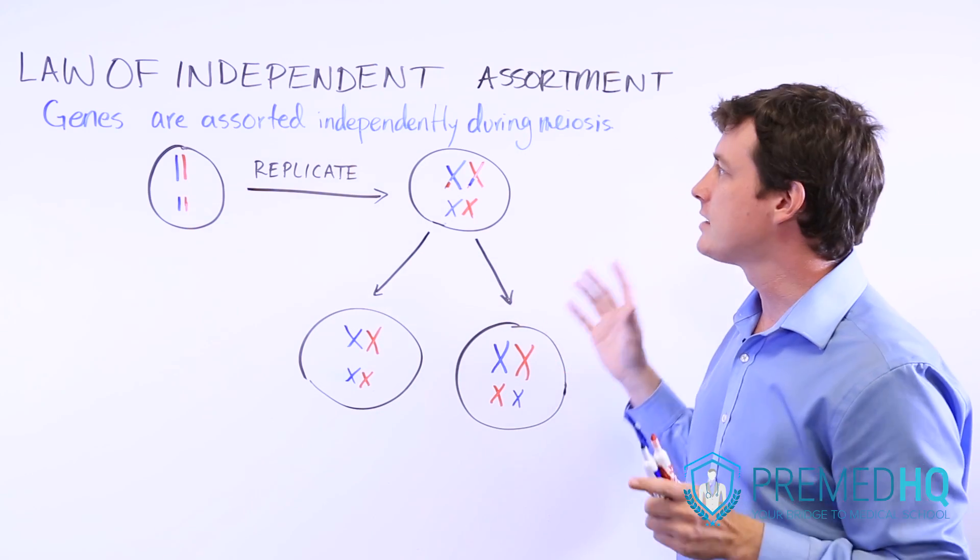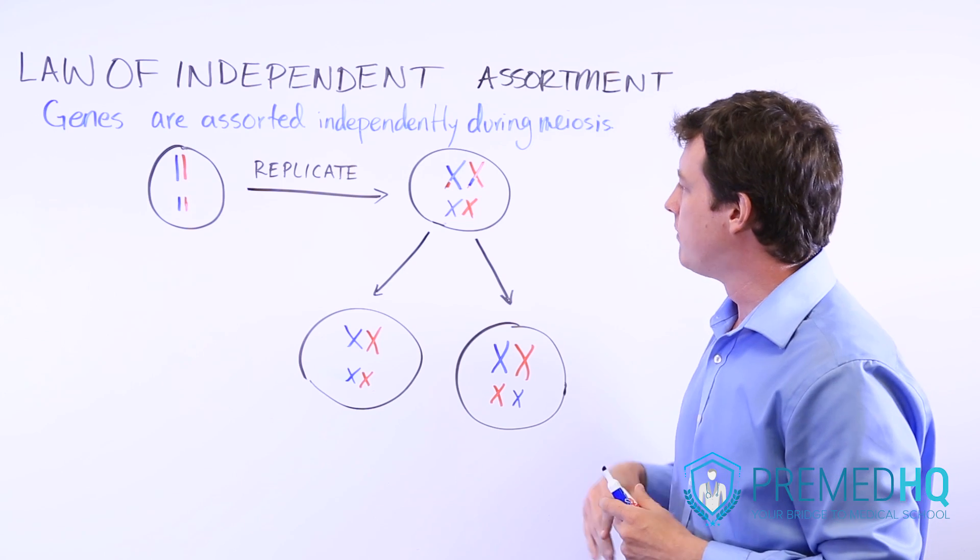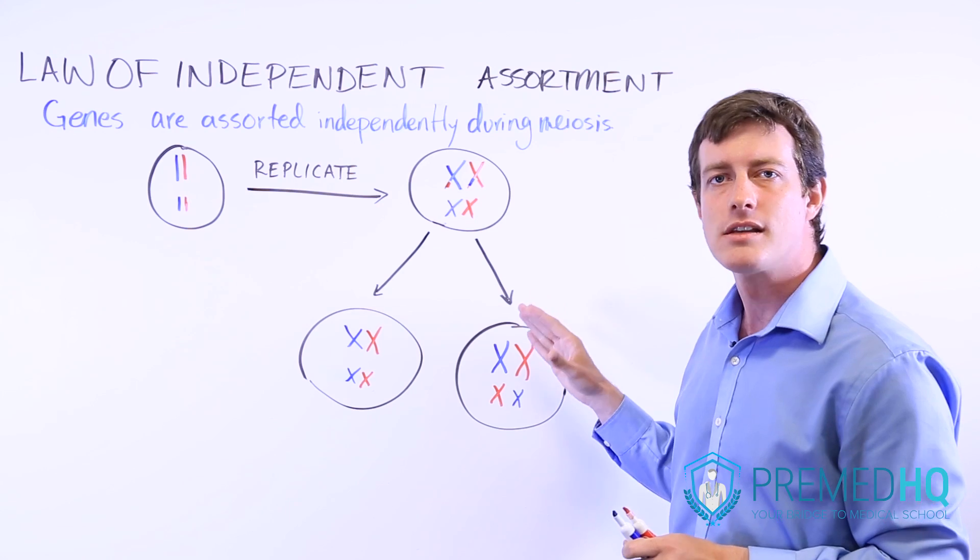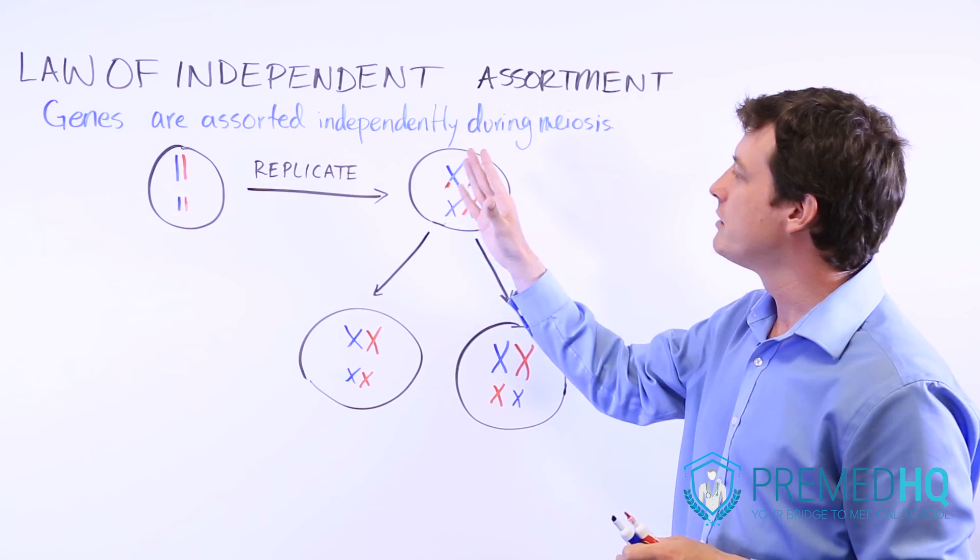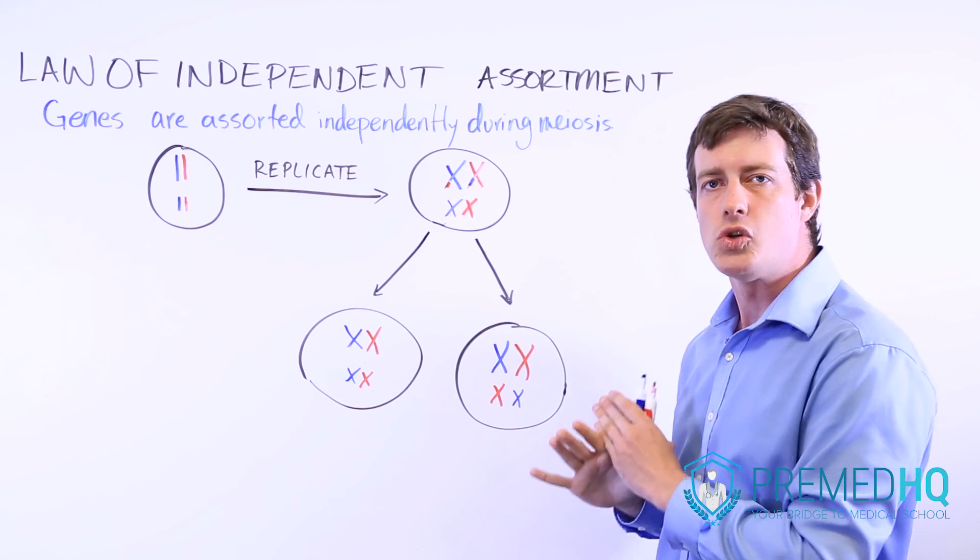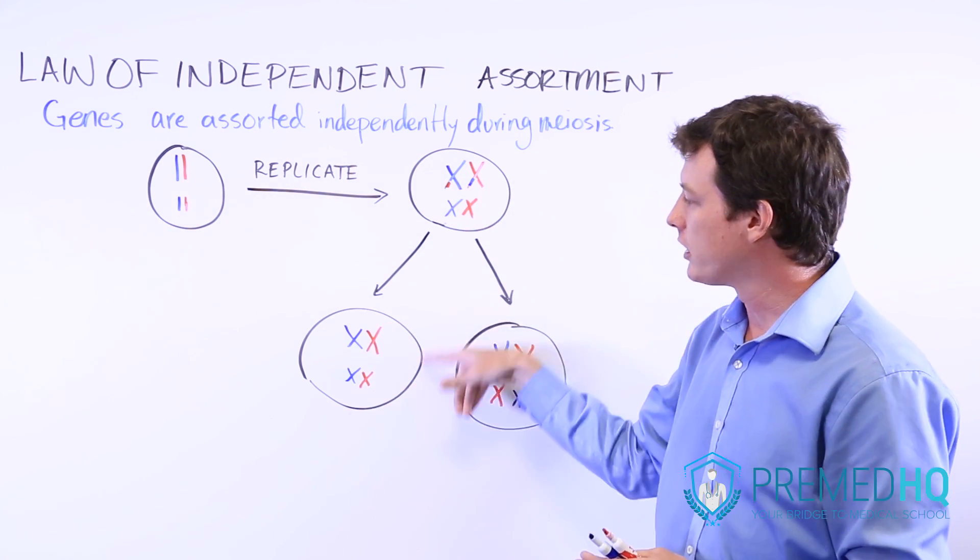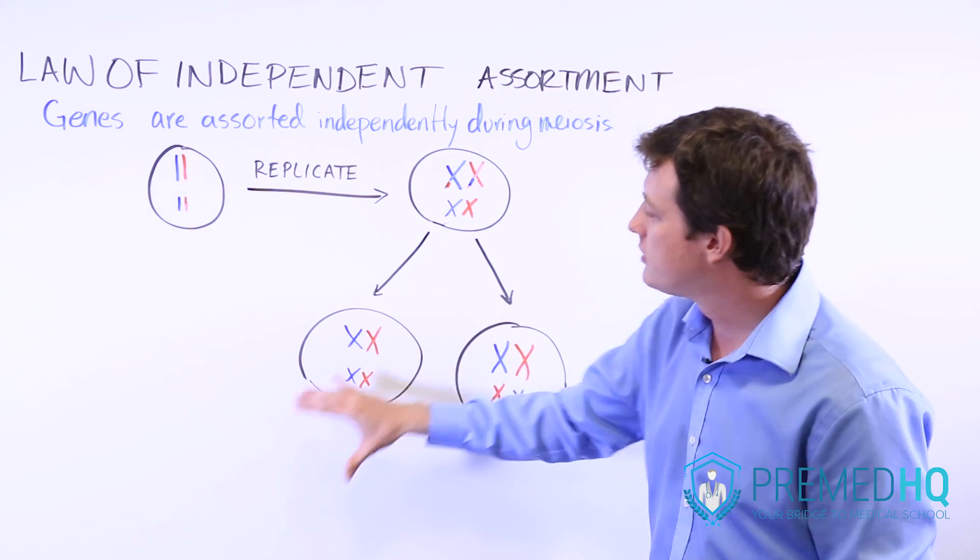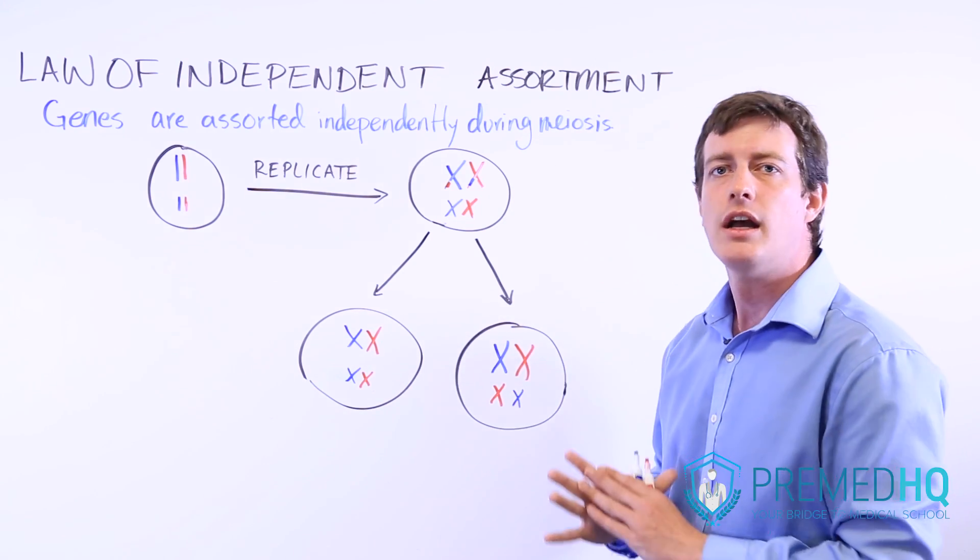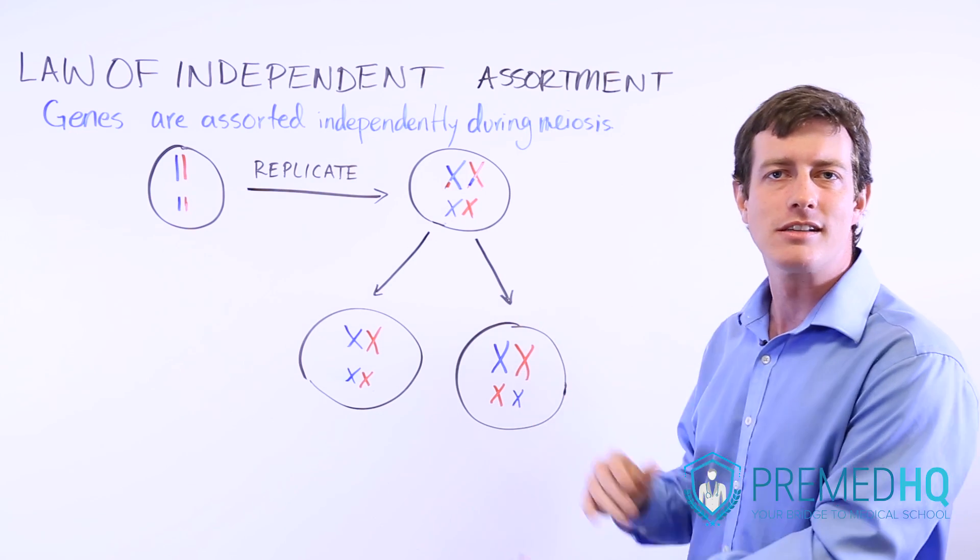And so since the time of Mendel, we've added an understanding of crossing over, of genetic linkage, of gene mapping and things like that that we'll discuss. But before we get to that, it's really important to realize that there is no real rhyme or reason to how different alleles are inherited and how they're passed down during the meiosis process to the four separate gametes that will be formed. So there's a lot of independence and the only exception to that is genetic linkage, which we'll now be discussing.